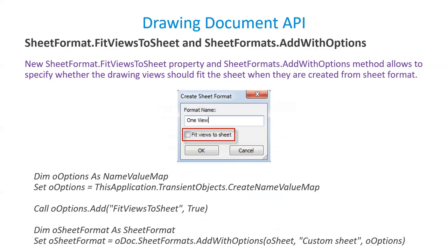A new property called Sheet Format Dot Fit Views To Sheet is added in Inventor 2021 API. While adding a sheet format to a sheet, you can specify whether the added drawing views should fit within the sheet or not. Here is sample code showing how to specify the Fit Views To Sheet property.